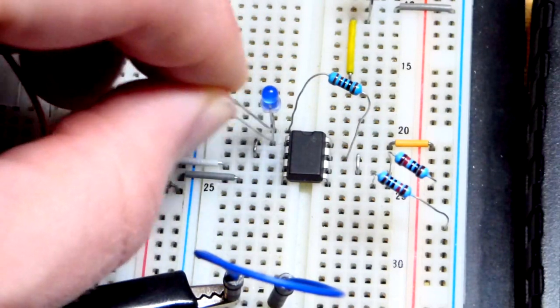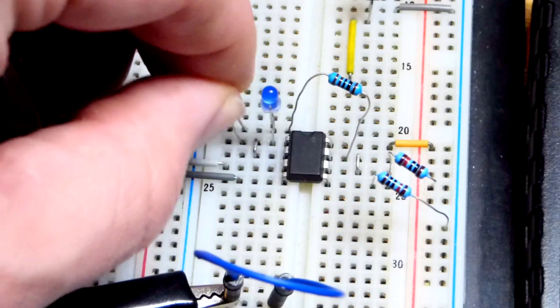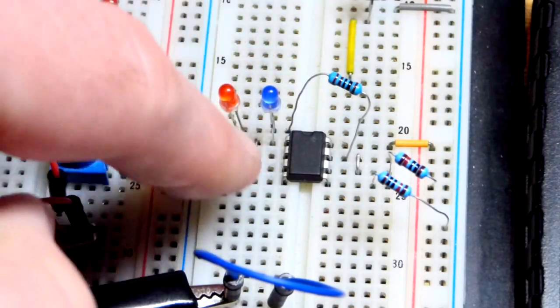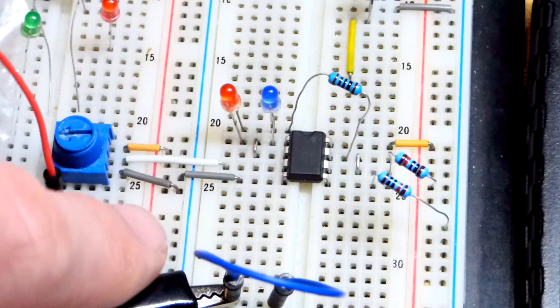And the red LED wired in the opposite direction. Long lead, the anode, to the output. Short lead, the cathode, up. And we have the same circuitry over here. The inverting input tied to the output.